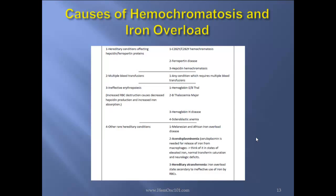Causes of hemochromatosis and iron overload state include: one, hereditary conditions such as C282Y hemochromatosis, ferroportin disease, or hepcidin hemochromatosis; two, multiple blood transfusions; three, ineffective erythropoiesis, in which increased RBC destruction causes decreased hepcidin production and increased iron absorption, such as thalassemias, any hemoglobinopathy, or sideroblastic anemia.